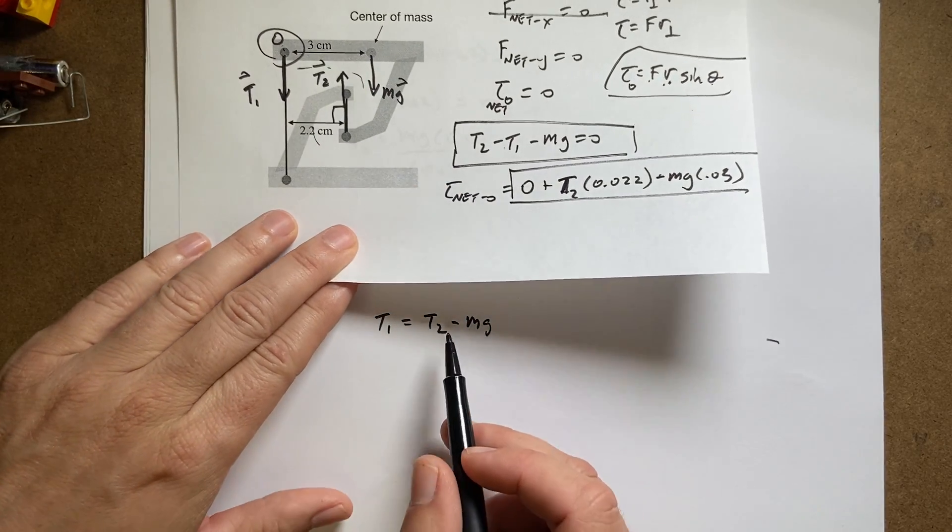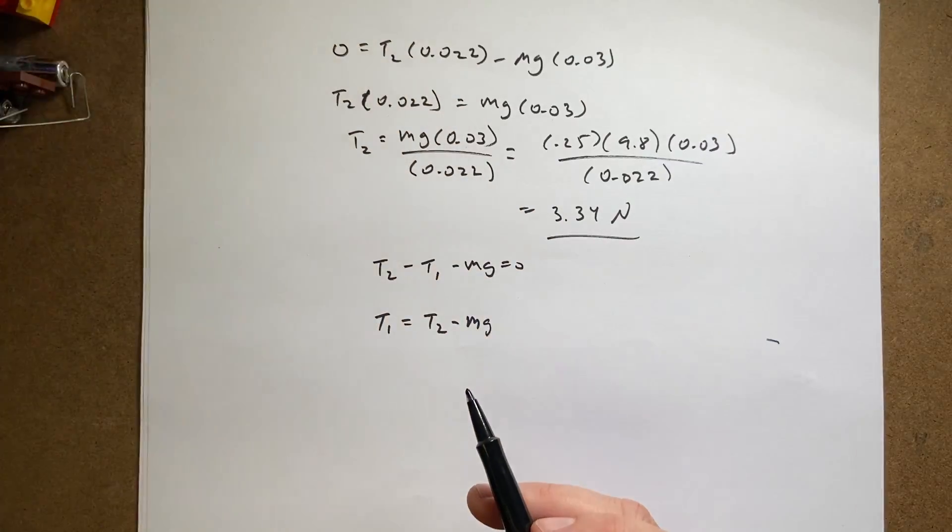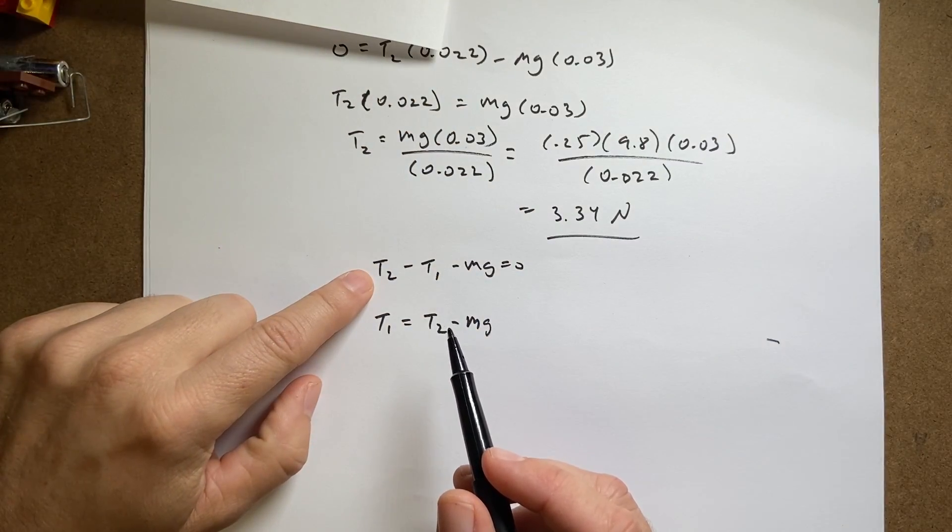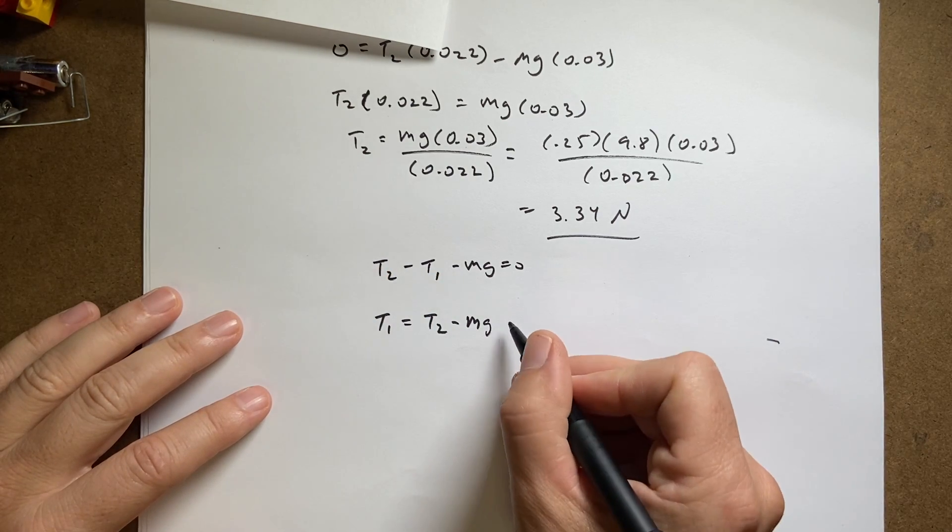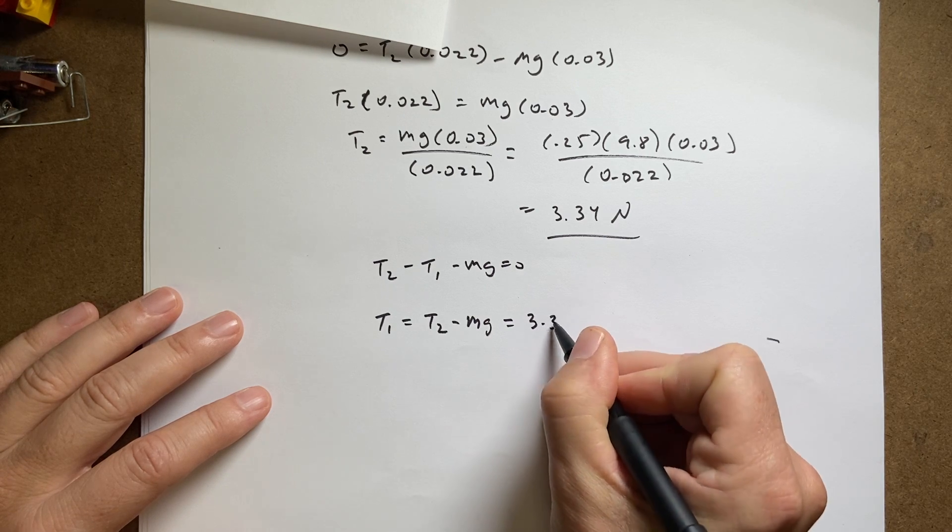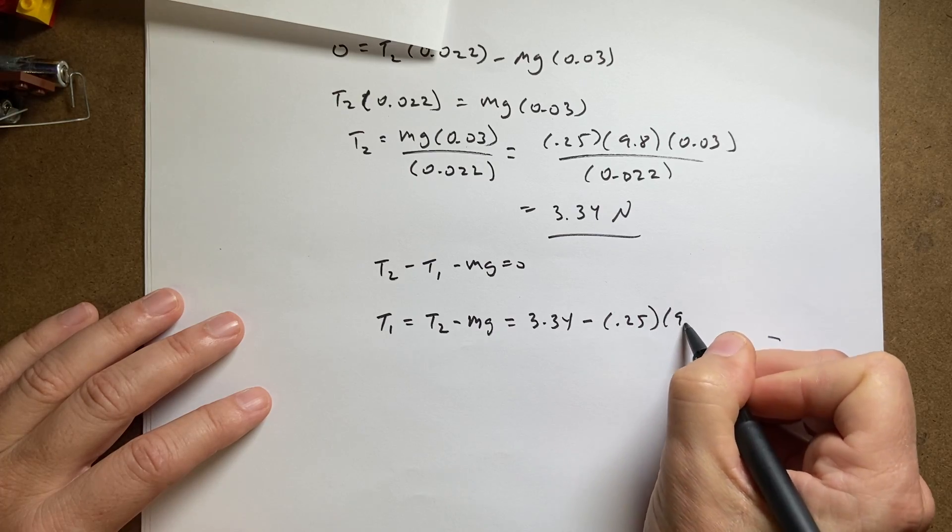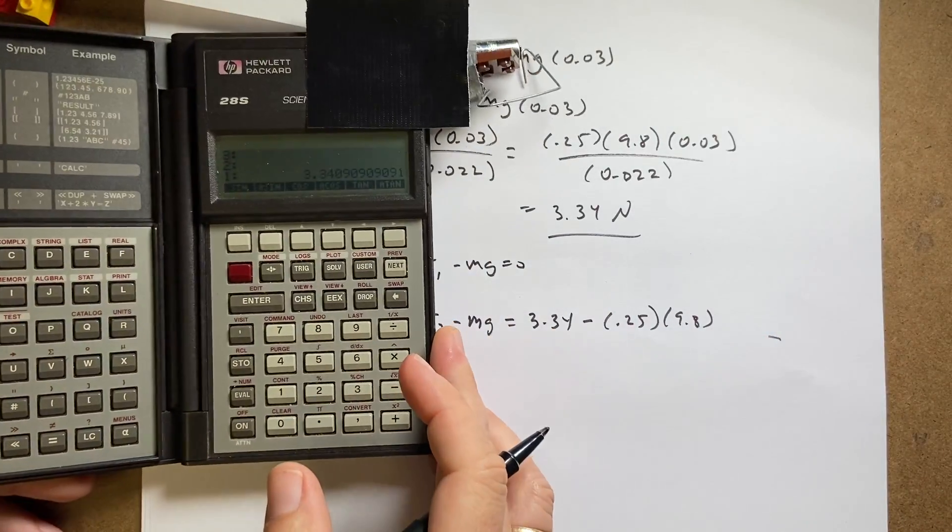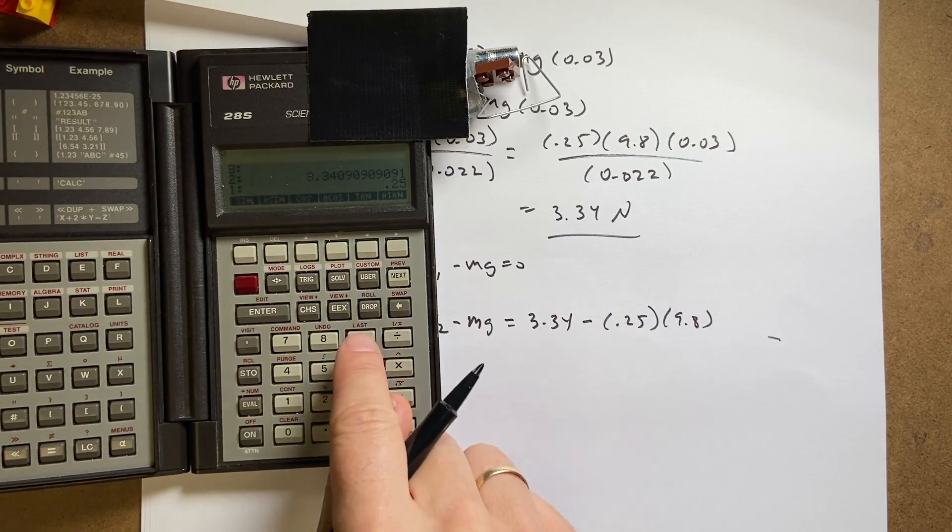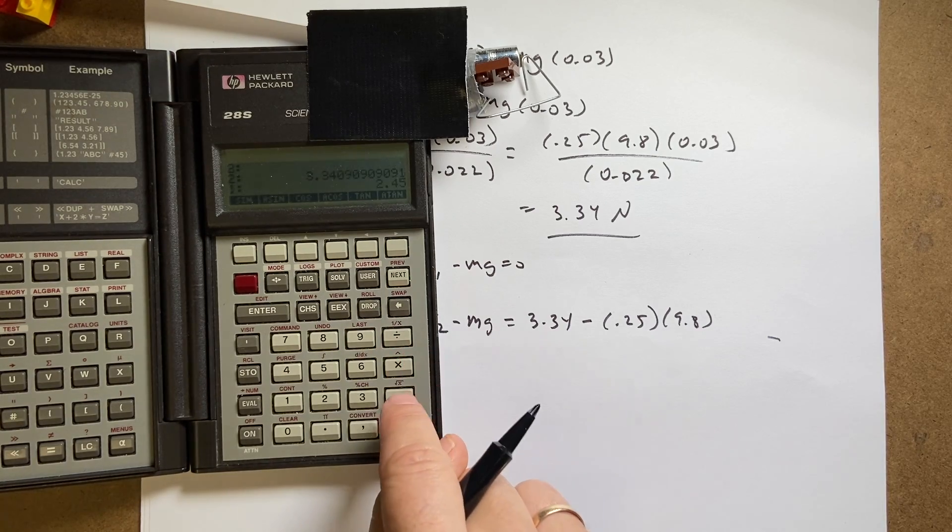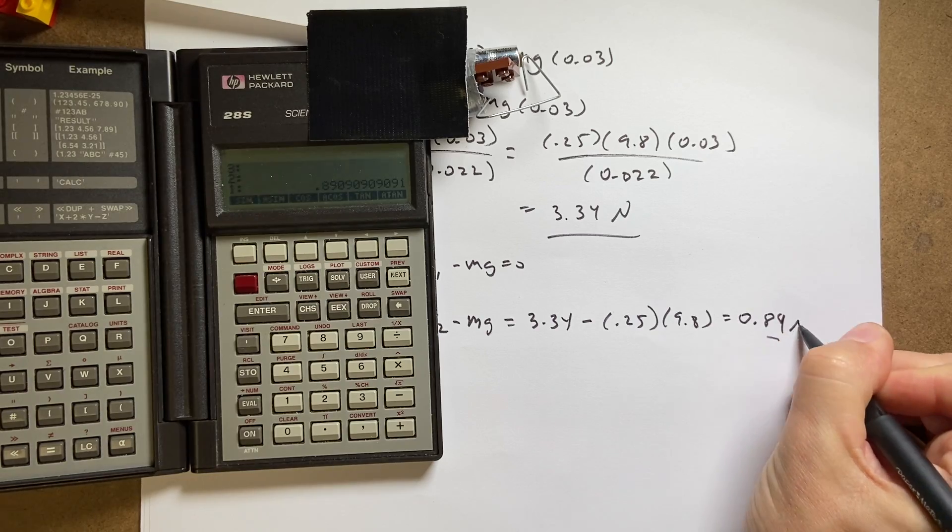I feel like that's wrong. T2 is pulling up, T1 down. Okay, okay, that's good. So it's going to be 3.34 minus 0.25 times 9.8. Again, calculator time, I actually have that already in there. So let's say 0.25, enter, 9.8 times, subtract. And I get 0.89 newtons.